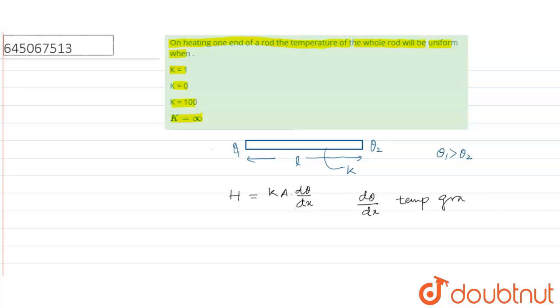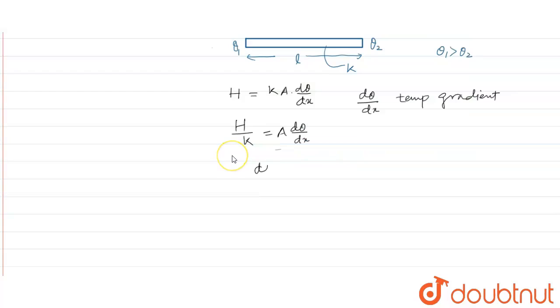Temperature gradient. Now, I can write H/k equal to A dθ/dx. Now, that means dθ should be 0.